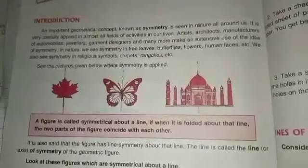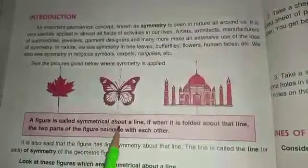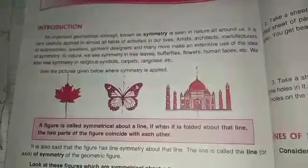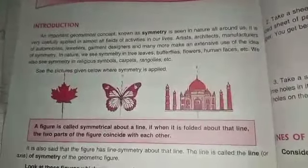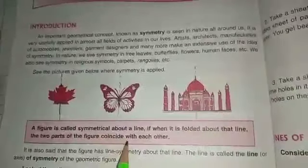They coincide with each other. So a figure is called symmetrical about a line when it is folded through that line and the two parts coincide with each other.